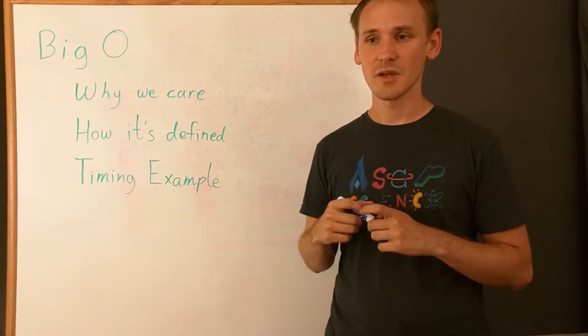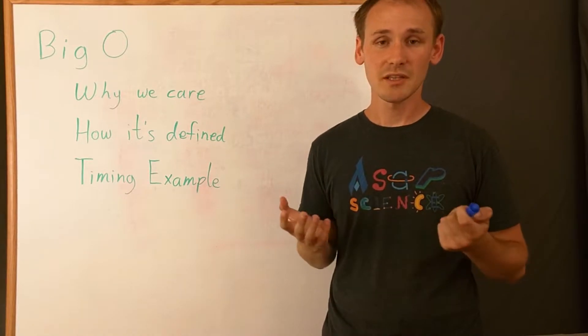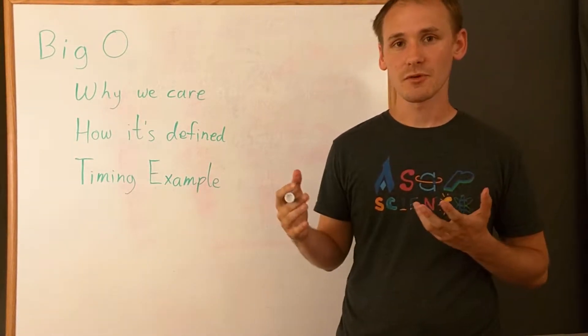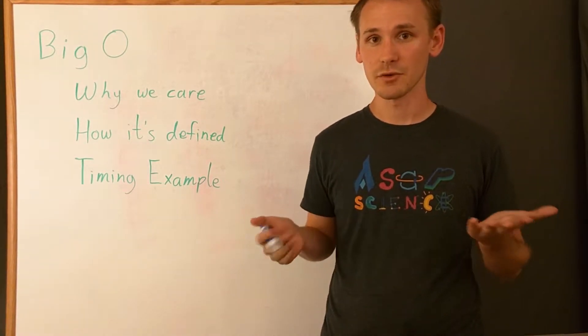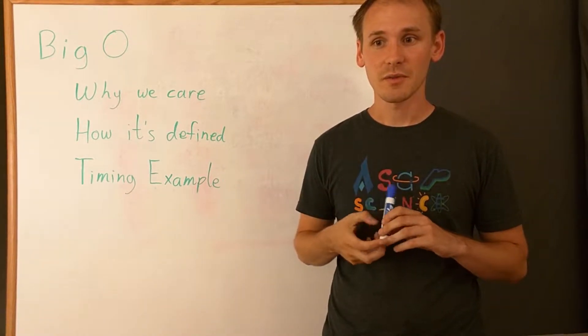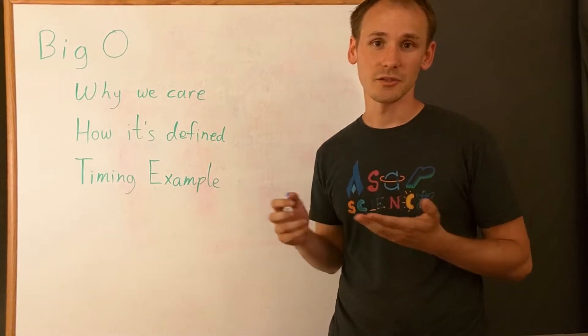So as for why we care, the main reason is speed, memory usage, and basically most other things that we want to optimize in a program. You can imagine a program where part of its job is to tell whether or not a word is in a list of words. For example, when you search for a web page, we have to somehow know that a word is in a web page or not.